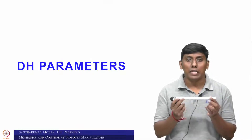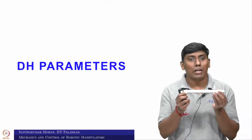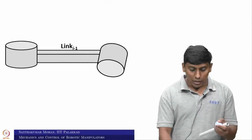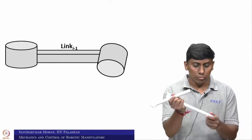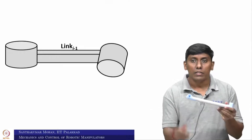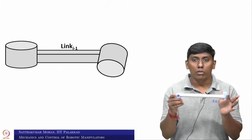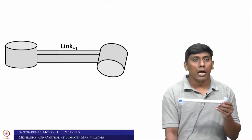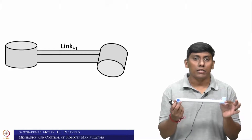For that we are taking one link. This is what we call a link — a random link which we call link k or link i minus 1. Now this link would be having a set of things. You can actually see I am showing it. This is what becomes a link, and this link is having a simple arrangement — one elbow is coming towards you, one elbow is pointing upward. As per Denavit-Hartenberg, any link is supposed to be a binary link.